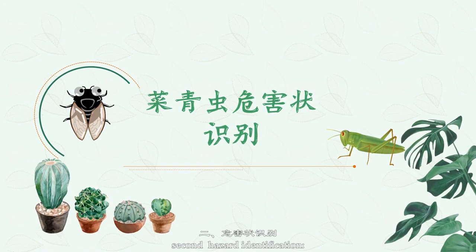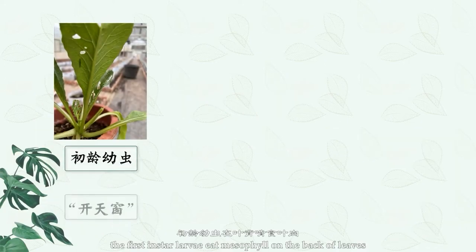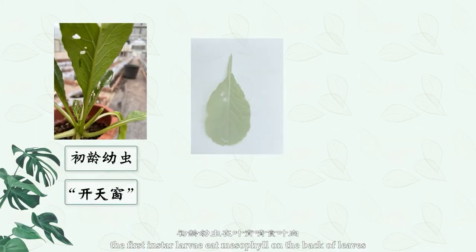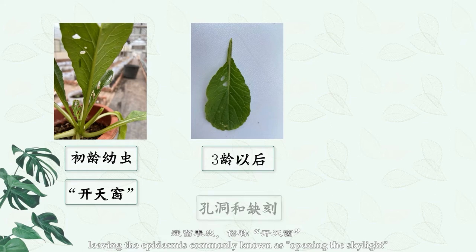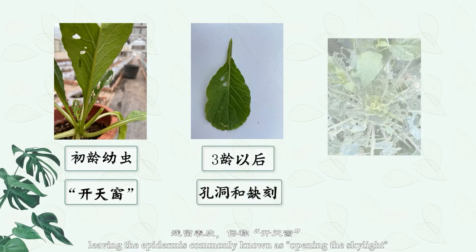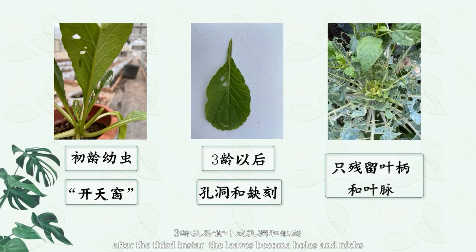Second: hazard identification. The first instar larva feeds on mesophyll on the back of the leaves, leaving the epidermis — commonly known as opening the skylight. After the third instar, the leaves become holes and nicks, and in severe cases, only the petioles and veins remain.